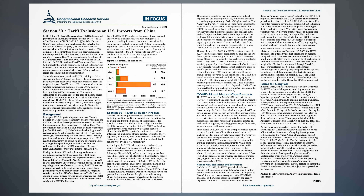As the Biden administration reviews the Section 301 actions against China and possibly makes use of Section 301 authorities in a number of ongoing investigations initiated under the Trump administration — for example, against France and Vietnam — Congress could consider amending Title III of the Trade Act of 1974. For example, it could require greater congressional consultation or approval before trade restrictions are imposed, modified, or waived pursuant to Section 301, or establish a formal product exclusion process. Alternatively, it could engage with the administration to develop and implement specific guidelines for when and how to grant and extend exclusions. This could potentially promote transparency, consistency, and proper application of standards in reviewing exclusion requests, thereby helping to ensure that the USTR carries out Section 301 objectives as prescribed by Congress.